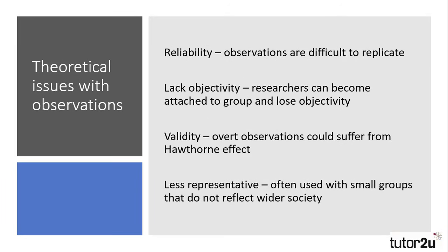Theoretical issues with observations include reliability — observations can be difficult to replicate given the nature of human beings and how their behaviours differ. Researchers can also lose objectivity if they form attachments to groups and come to empathise with their position. Overt observations also run the risk of having less validity, as people may act differently than normal if they know they are being observed — what sociologists refer to as the Hawthorne effect. The small scale of the research also means findings are less likely to be representative of wider society, and researchers are unable to generalise to the rest of the population.